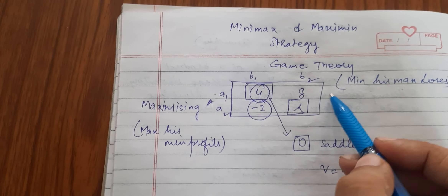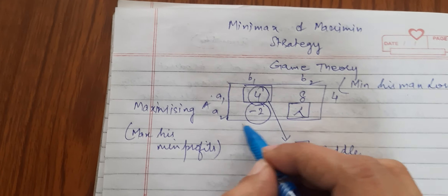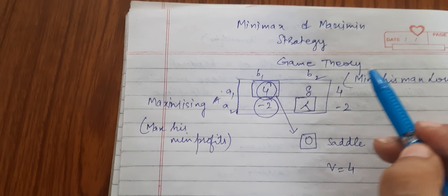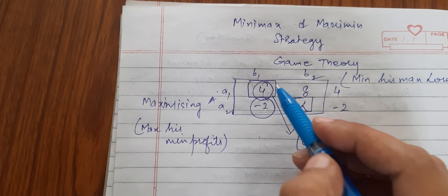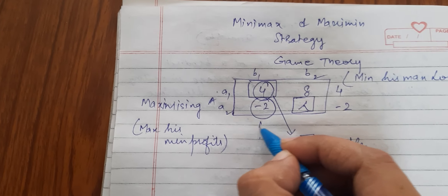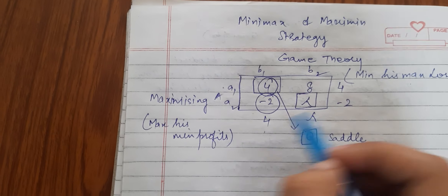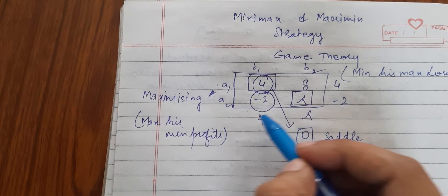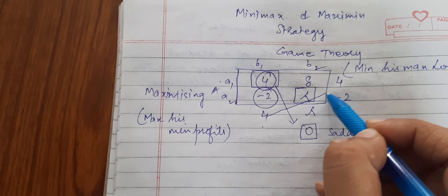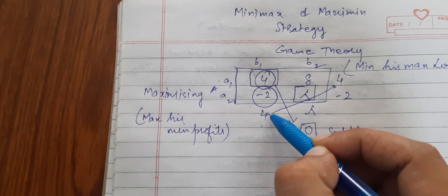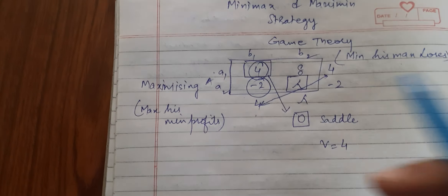So Maximin and Minimax means that the player will always extract his minimum values row-wise. Here he got 4, and here he got minus 2. And the other player extracted his maximum loss strategies and set them aside. Then both of them found a match — that is the strategy — and thus we determine the value of the game.